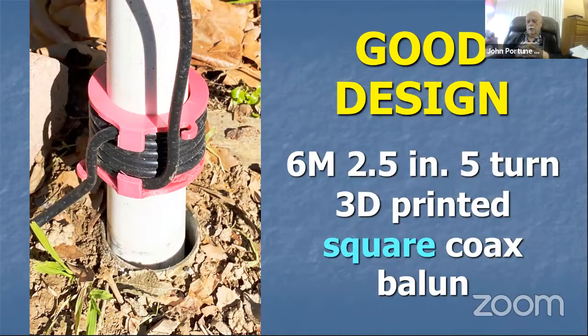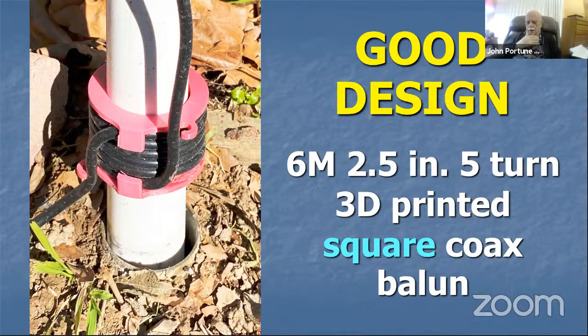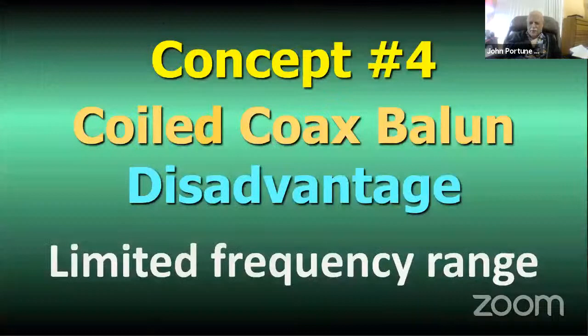Here's a good design example: my six-meter 3D-printed bobbin. If you want the STL files, I'll be glad to send them — my email address will come up with a QR code near the end. This is at the base of a six-meter antenna that will appear in a near-future QST article, mounted on a two-and-a-half inch conduit buried in the ground. This is where I test all my antennas to see if the neighbors think they're ugly.